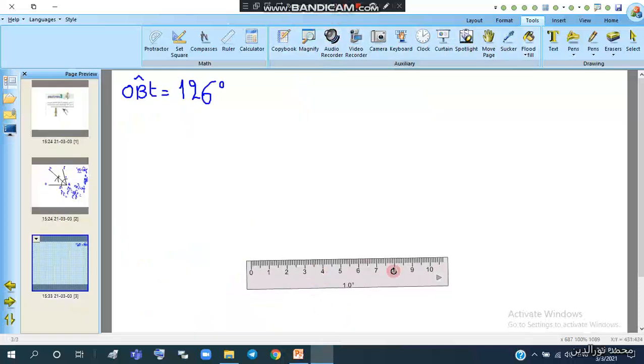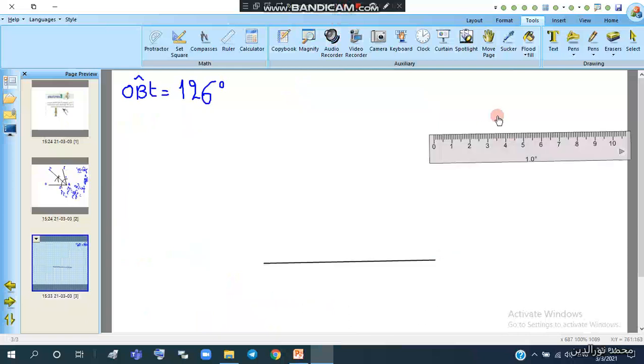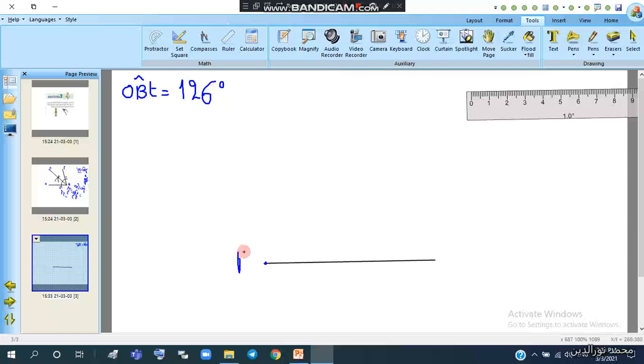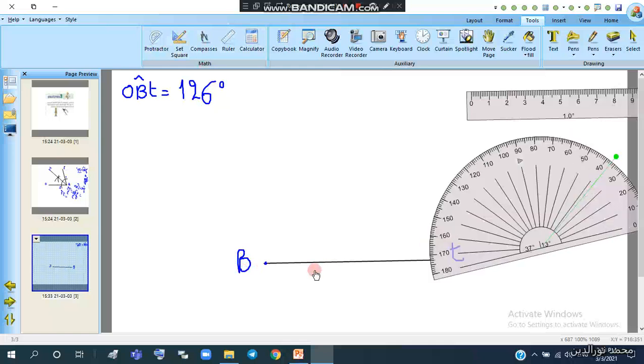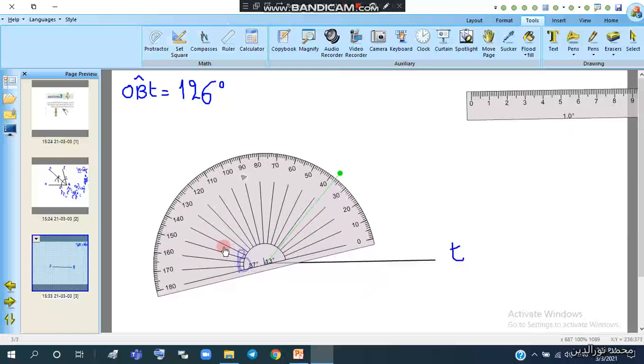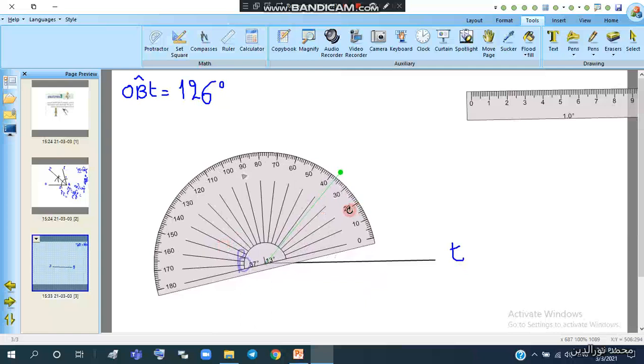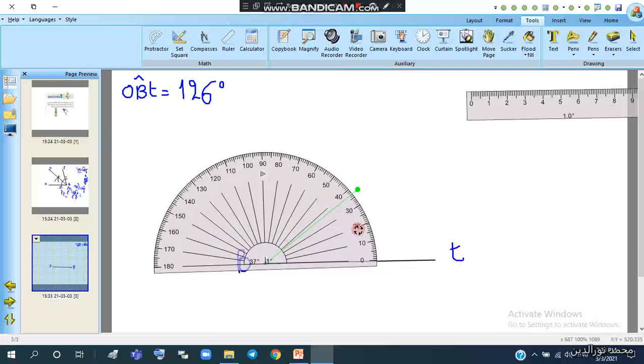In the next part, we have to draw angle OBT equals 126 degrees. We'll draw the first side. The vertex is B. We'll draw side BT and use the protractor. Put the center on the vertex of the angle and tilt the protractor such that it passes through zero. We'll count up to 126. This is the reading, 126.